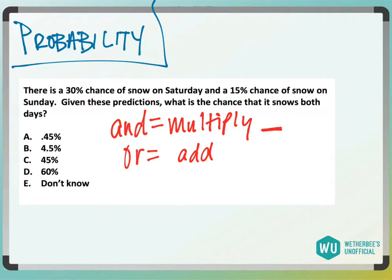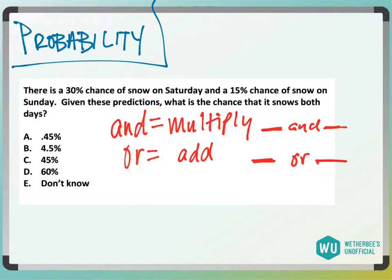The probability you can guess one thing and then another should be a lot smaller than the individual probabilities, and the probability you can guess one thing or another should be greater than the individual probabilities. If you add things, they get bigger, and if you multiply fractions that are positive fractions less than one, they should get smaller.